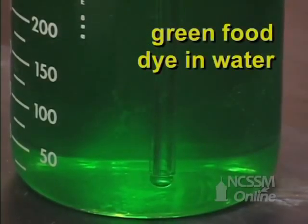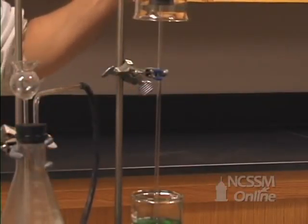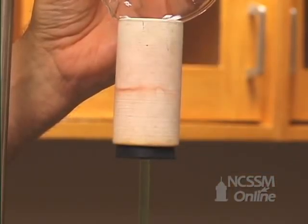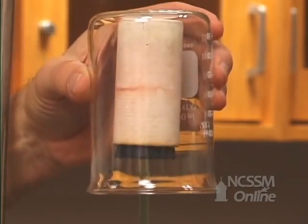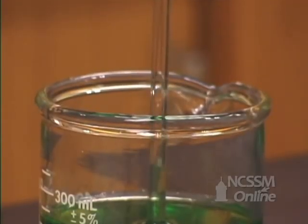When we remove the beaker, the hydrogen gas diffuses out of the porous cup faster than the air can diffuse into the cup. This creates a low pressure inside the cup. Atmospheric pressure then forces the green water up the tube and into the cup.